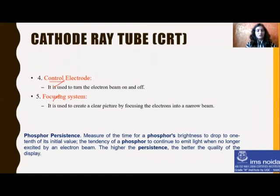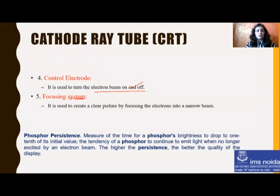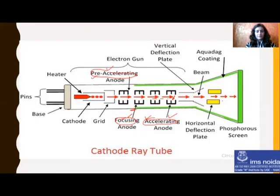The control electrode is used to turn the electron beam on and off. The focusing system — meaning the focusing anode — is used to create a clear picture by focusing electrons in a narrow beam. The focusing system determines where to focus, and the accelerating anode accelerates the speed of the electrons.